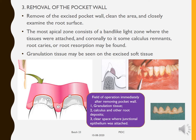Step three is removal of the pocket wall. After incisions, the excised pocket wall is removed, the area is cleaned, and the root surface is carefully examined. The most apical zone consists of a band-like light zone where tissues were attached, and coronally to it calculus remnants, root caries, or root resorption may be found. Granulation tissue may be seen on the excised tissue. Here you can see the diagrammatic representation showing granulation tissue, calculus, and the clear space where the junctional epithelium was attached.